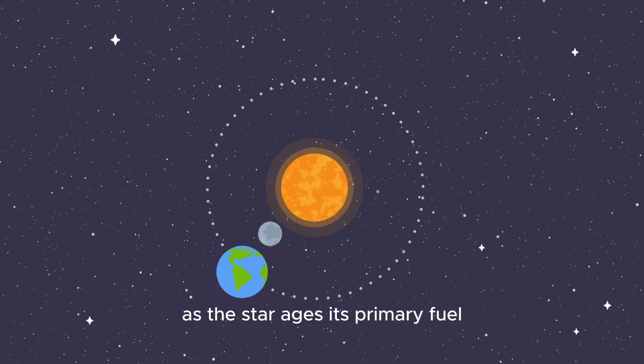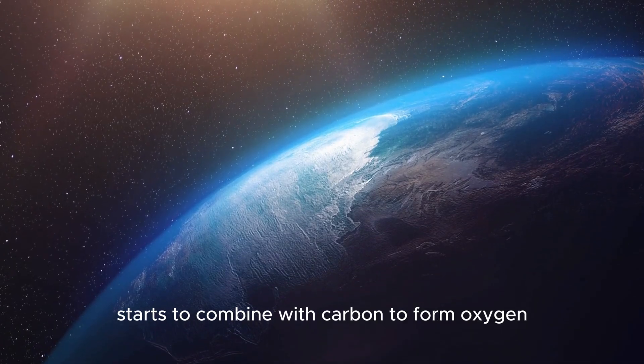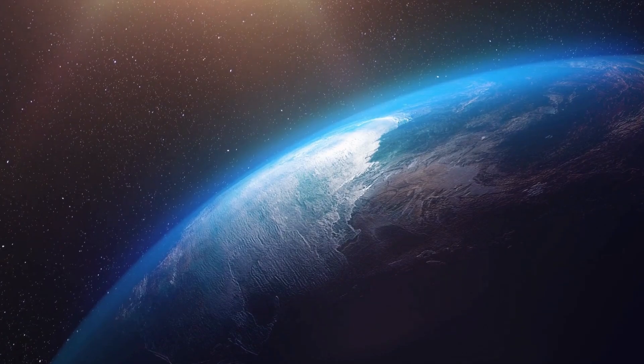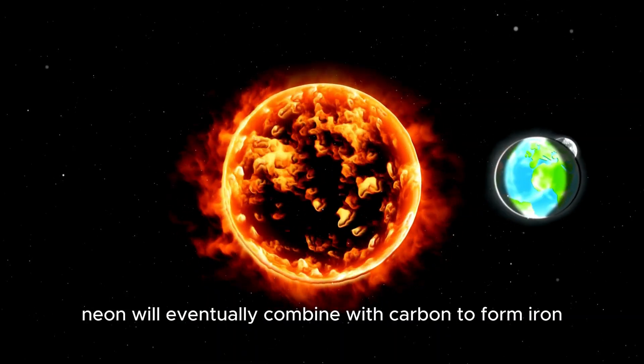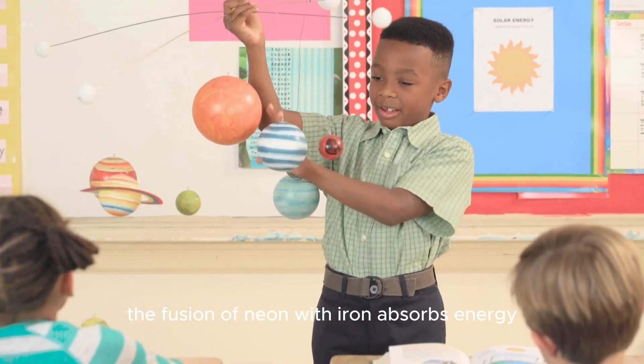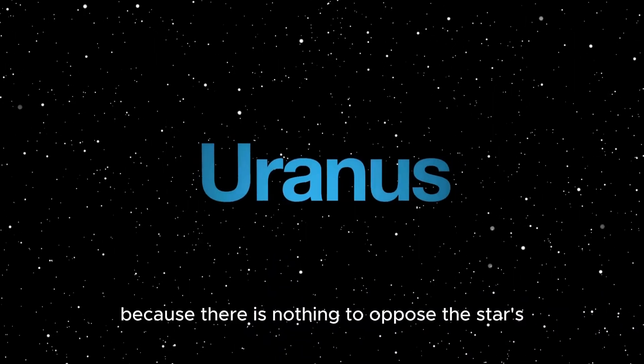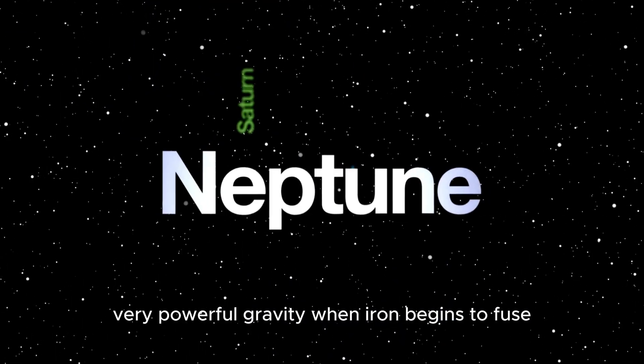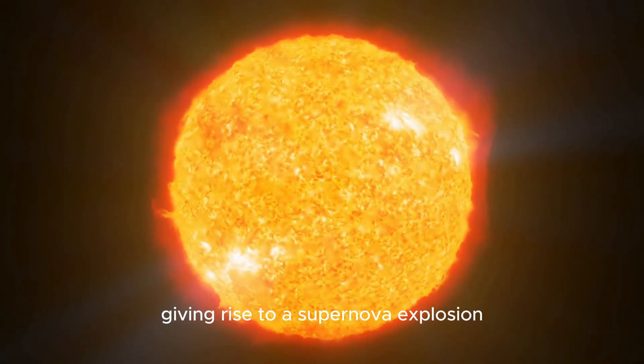As the star ages, its primary fuel, hydrogen, runs out and helium starts to combine with carbon to form oxygen. After the helium is used up, neon will eventually combine with carbon to form iron. When this happens, the fusion of neon with iron absorbs energy instead of releasing it. Because there is nothing to oppose the star's very powerful gravity, when iron begins to fuse, the star collapses in on itself, giving rise to a supernova explosion.